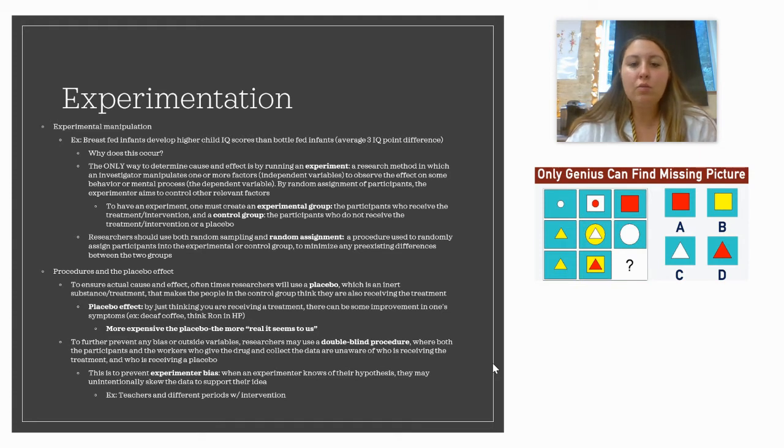By using random assignment of participants, the experimenter aims to control other relevant factors. We'll talk about all this in a moment, but basically, first thing to have an experiment, you have to be able to control a variable. In this case, we're going to want to control whether the babies are receiving breast milk or not. Then, once you have the variable you're going to manipulate, you need to create some groups. You're going to have an experimental group, and this is the people who are going to receive the treatment. In this case, the experimental group would be the babies who receive breast milk.